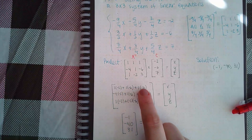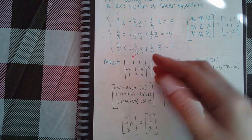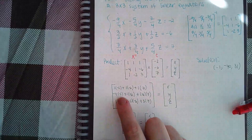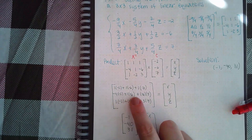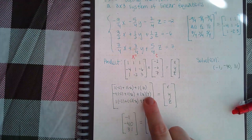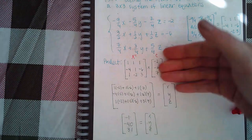So now I have to actually figure out what this product is. I'm going to take row 1 times column 1, which is 1 times negative 2, 1 times negative 6, 1 times 7.